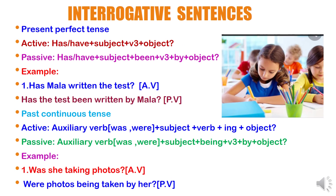Present perfect tense in interrogative sentence. In active voice: has/have plus subject plus V3 plus object. In passive voice: has/have plus subject plus been plus V3 plus by plus object. Example — in active voice: 'Has Maula written the test?' In passive voice: 'Has the test been written by Maula?' — 'test' is singular so use 'has'. 'Been' is written as it is. 'Written' is the V3 form of the verb. 'Maula' is the object.